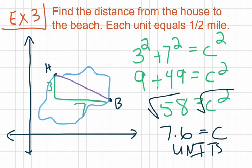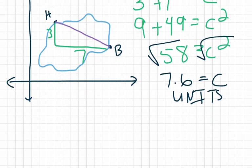However, because each grid line represents a half mile, each unit is a half mile. We have to take 7.6, multiply it by a half. 7.6 multiplied by a half is the same thing as 7.6 divided by two. So when we take 7.6 and divide it by two, we're going to get 3.8 miles as the distance from point H to point B, the distance from the house to the beach.